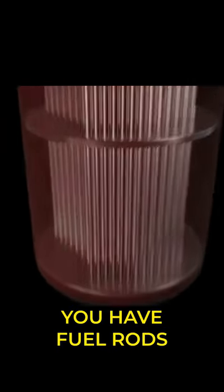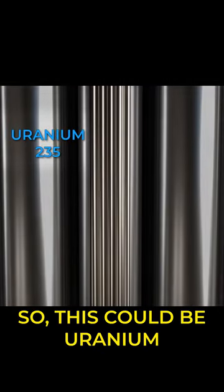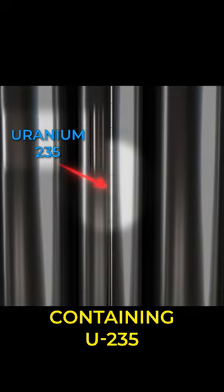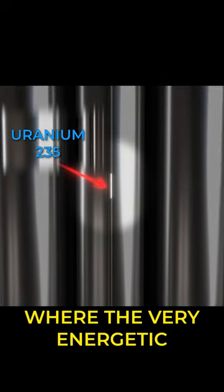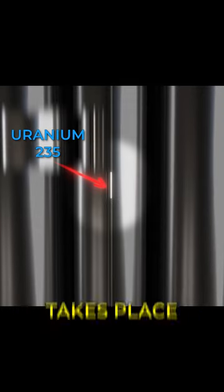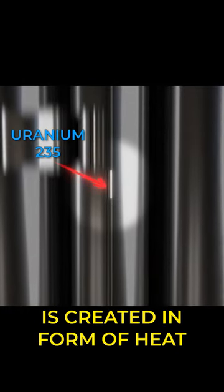Inside the core, you have fuel rods containing your nuclear fuel. This could be uranium containing U-235 inside the fuel rods, where the very energetic splitting of the uranium takes place, and thus energy is created in the form of heat.